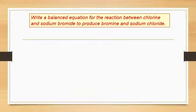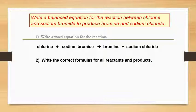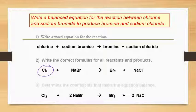Practice: write a balanced equation for the reaction between chlorine and sodium bromide to produce bromine and sodium chloride. First, write the word equation: chlorine + sodium bromide → bromine + sodium chloride (a displacement reaction). Then write correct formulas — note Cl₂ is diatomic, and NaBr and NaCl are in a 1:1 ratio. Finally, determine the coefficients: you need 2NaBr and 2NaCl to balance the equation: Cl₂ + 2NaBr → Br₂ + 2NaCl.